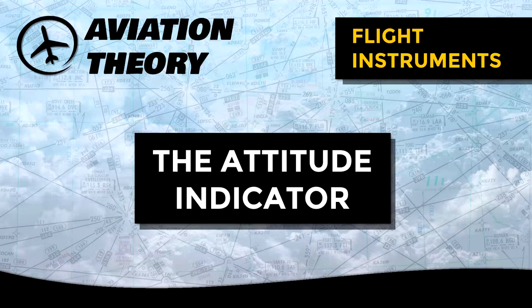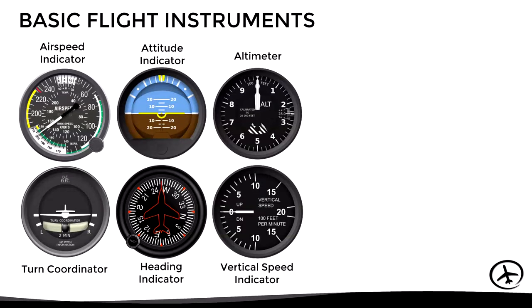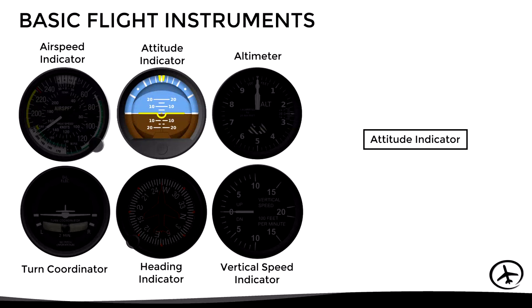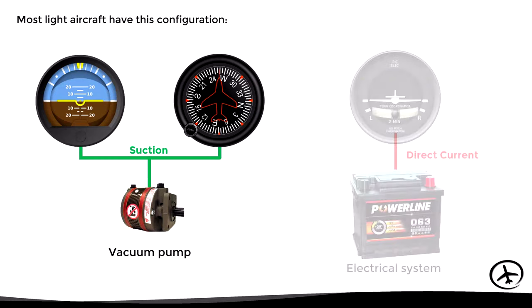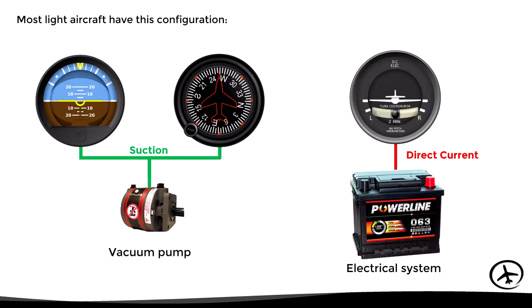Today we will talk about the attitude indicator, also known as the artificial horizon. This is one of the basic flight instruments found in any aircraft, and its operation is based on gyroscopic principles. Most light aircraft use the following configuration: the vacuum pump provides suction to drive the gyros of the attitude indicator and the heading indicator, while the turn coordinator's gyro is electrically driven by direct current. However, the attitude indicator can also be driven by electric current in some configurations.